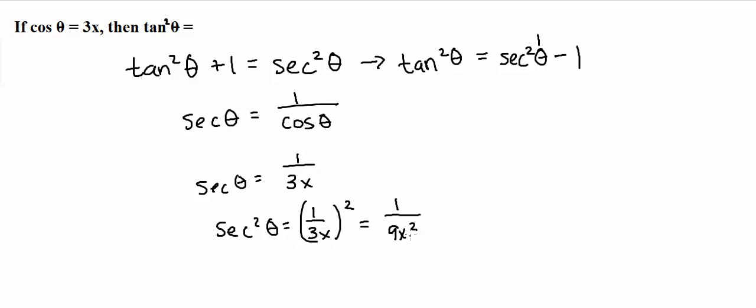So now, I'm going to go ahead and plug this back in. So tangent squared theta is equal to 1 over 9x squared minus 1. And this here is our answer.